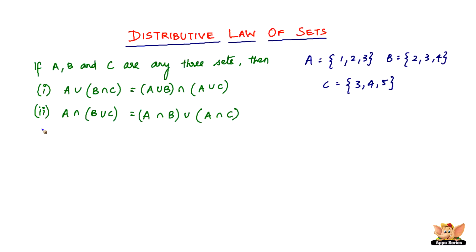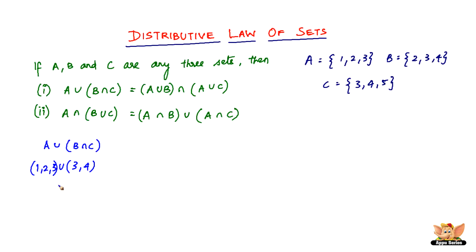So what we have is A union of B intersection C. B intersection C — the common elements are 3 and 4. So B intersection C equals {3, 4}, and A is {1, 2, 3}. So A union of B intersection C will be equal to {1, 2, 3, 4}.